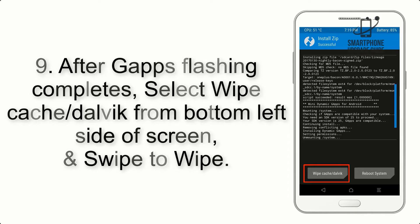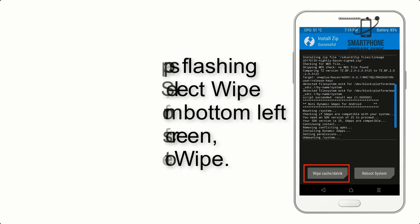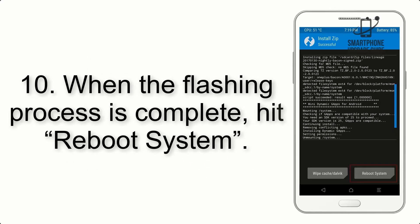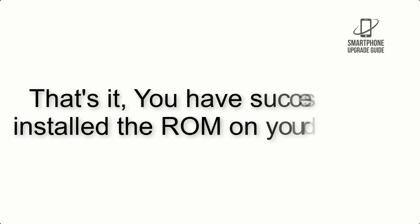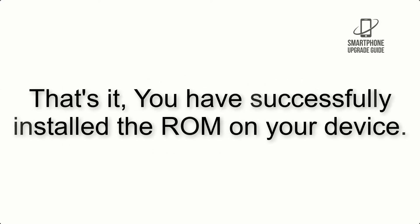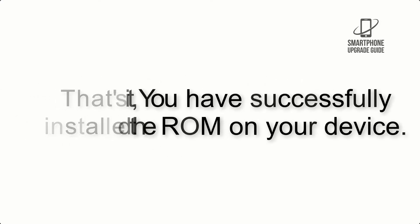Step 8: Flash the GApps zip package in the same manner. Step 9: After GApps flashing completes, select Wipe Cache and Dalvik from the bottom left side of the screen and swipe to wipe. Step 10: When the flashing process is complete, hit Reboot System. That's it — you have successfully installed the ROM on your device.